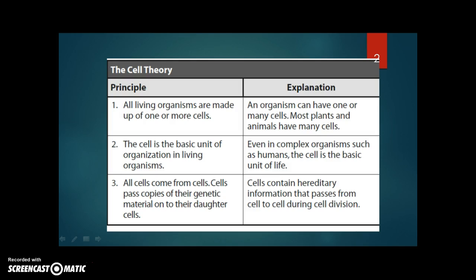The first one is all living organisms are made up of one or more cells. It means that an organism can have one or many cells. Most plants and animals have many cells. The second principle is the cell is a basic unit of organization in living organisms.